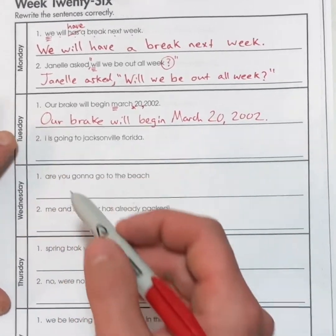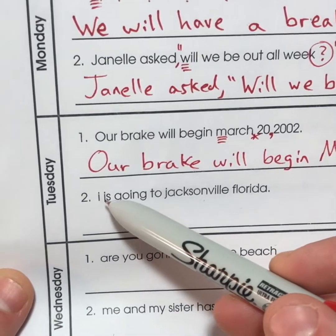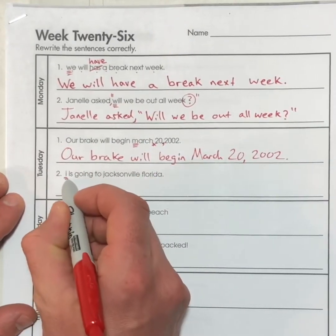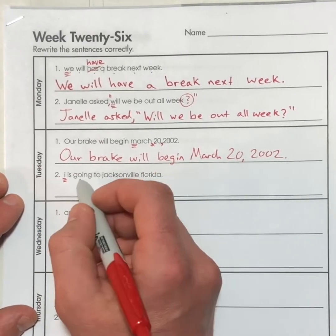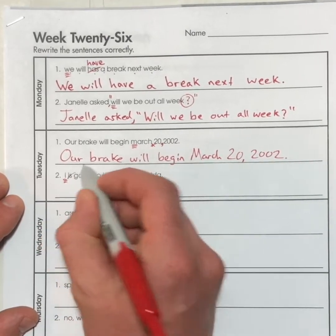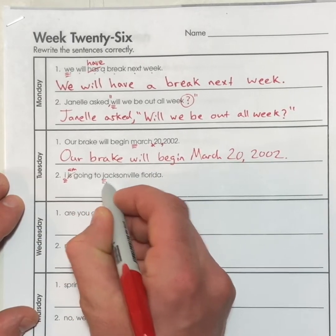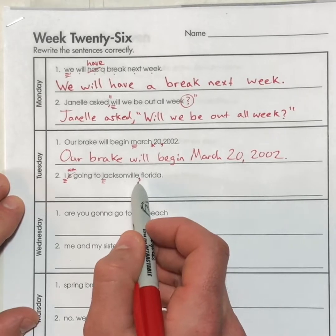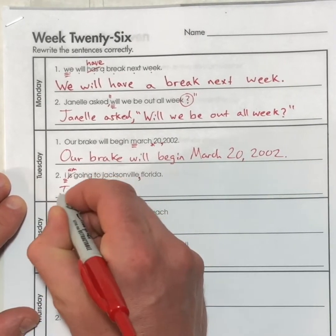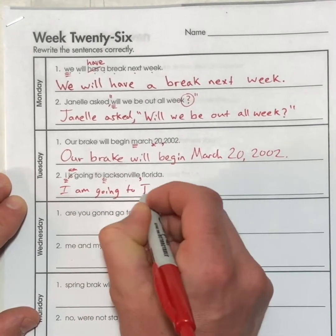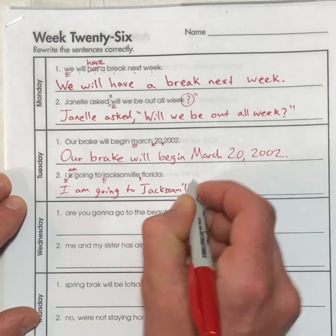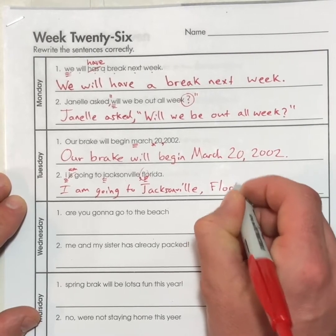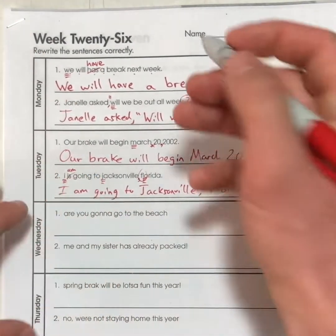The second one: 'I is going to Jacksonville Florida.' That needs to be capitalized. It should be 'I am going to capital Jacksonville, comma, capital Florida' — it's a state, it's a place. We made four corrections. Let's rewrite it: 'I am going to Jacksonville, Florida.' Don't forget your name on this — it's important. You will turn this in eventually.